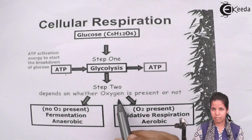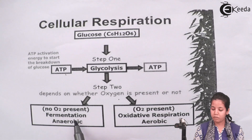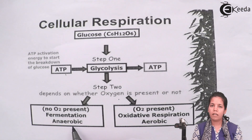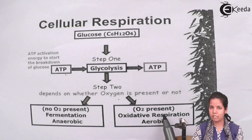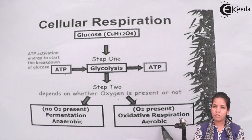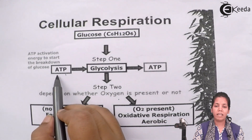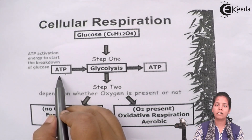It depends on whether oxygen is present or not. If no O2 is present, then fermentation or anaerobic breakdown takes place — breakdown in the absence of oxygen. When oxygen is present in the system, oxidative or aerobic respiration takes place — respiration in the presence of O2. ATP is a very high energy molecule, which we will see in further chapters. This is what cellular respiration does: it produces ATP, the energy currency of the cell.